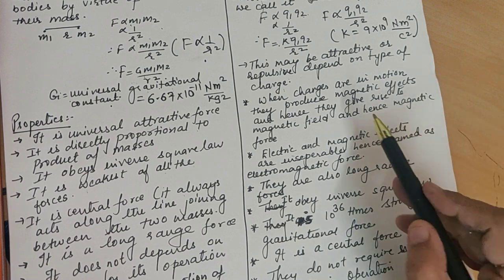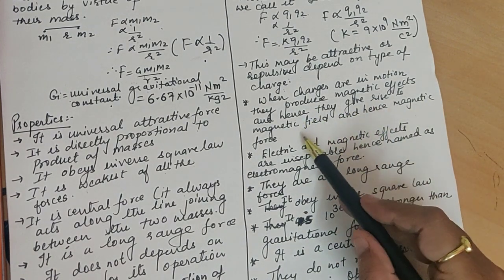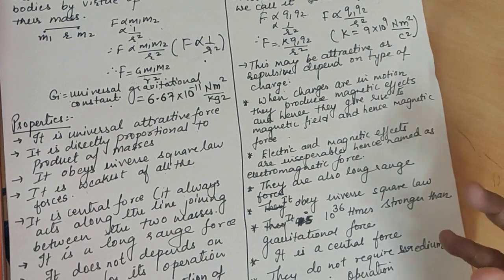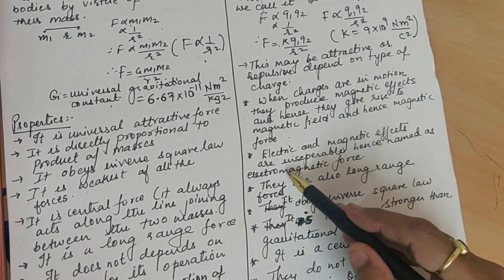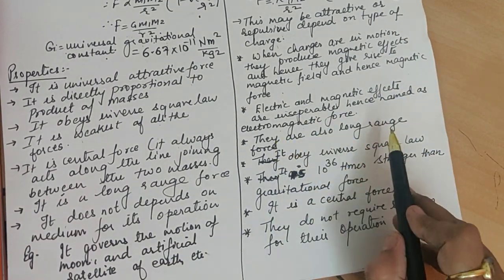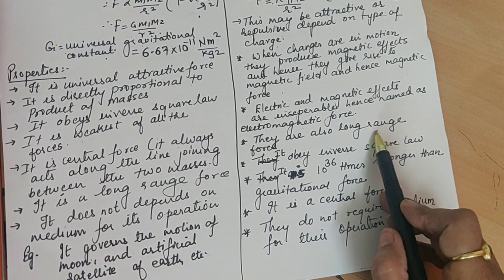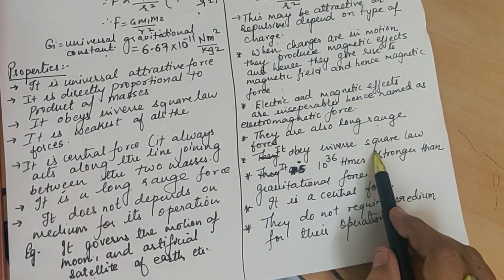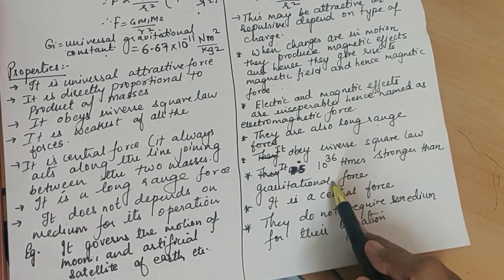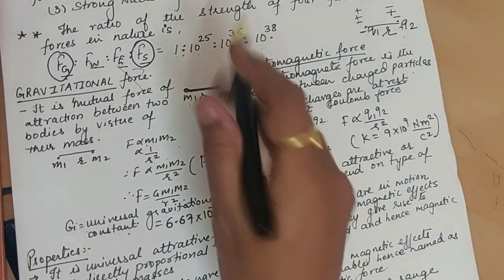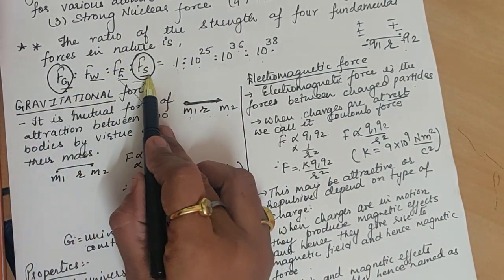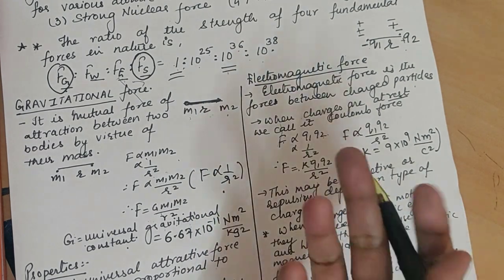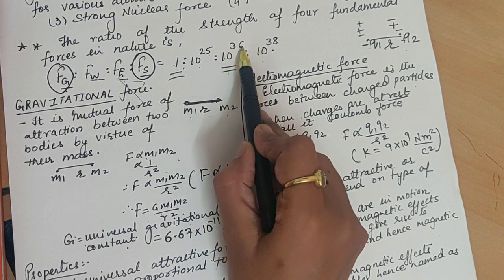When charges are in motion, they produce a magnetic effect — they give rise to a magnetic field, hence magnetic force. Electric and magnetic effects are inseparable, so they are together called electromagnetic force. It is a long-range force, and it obeys the inverse square law. Electromagnetic force is 10³⁶ times stronger than gravitational force — you can see this from their standard strength ratio.